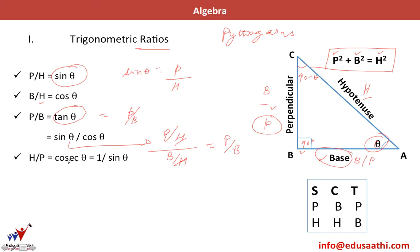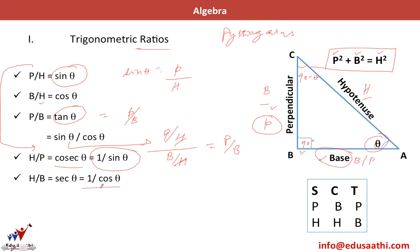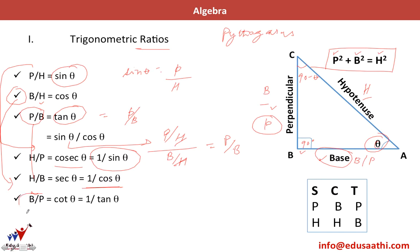The next ratio is cosecant theta, which is simply 1 divided by sin theta — you take the reciprocal of sin theta. Similarly, secant theta is the reciprocal of cos theta. Cot theta is the reciprocal of tan theta, so you take P/B and flip it to get B/P, which is cot theta.